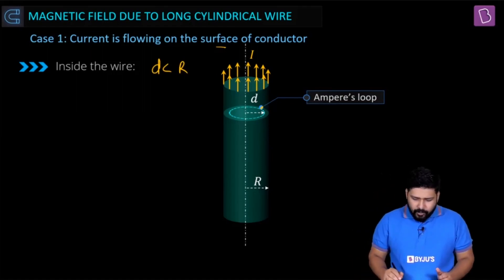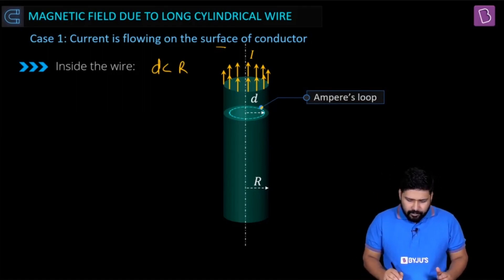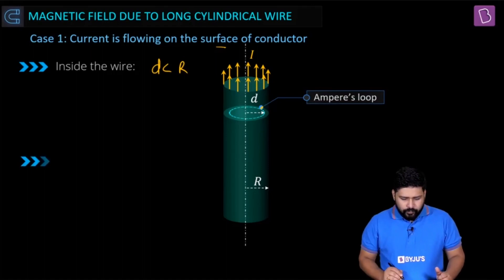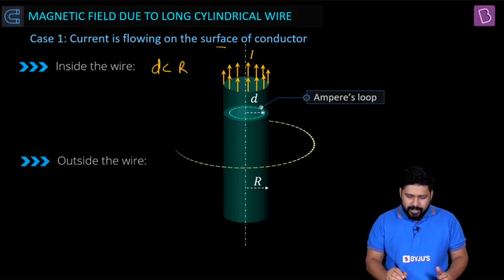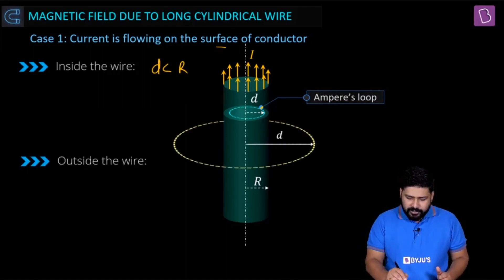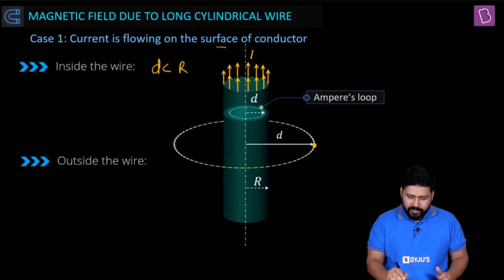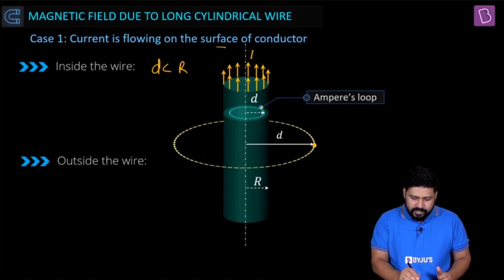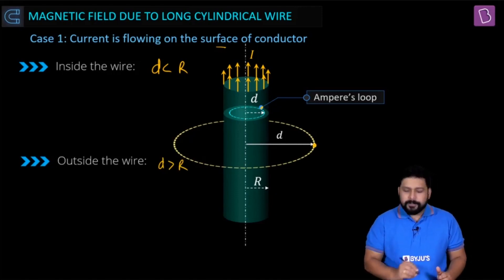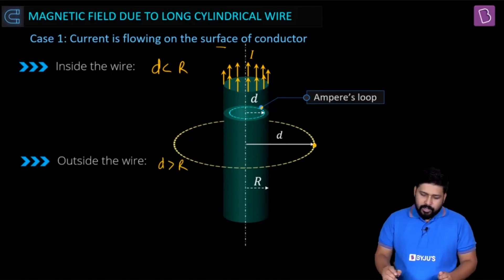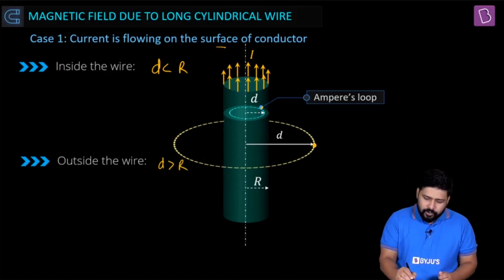Outside the wire, we also have to find the magnetic field. Let's draw an Amperian loop at this point. We have to find the value of magnetic field intensity. When d is greater than R, let's apply Ampere's law.